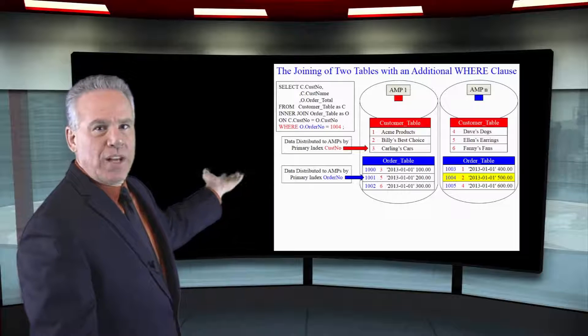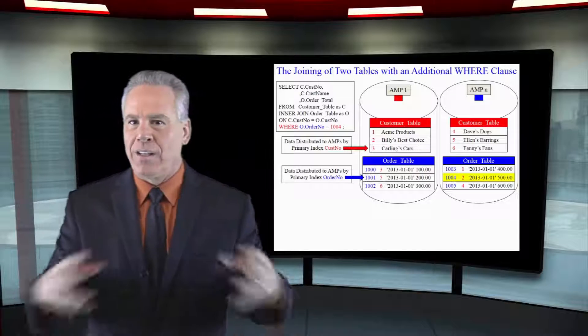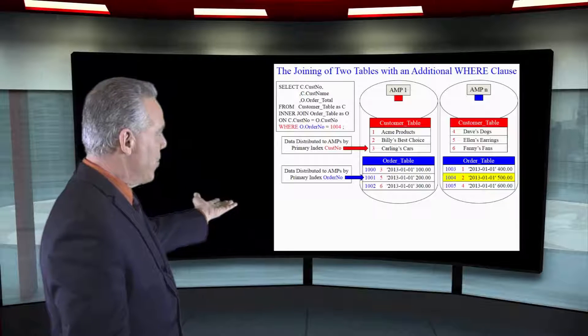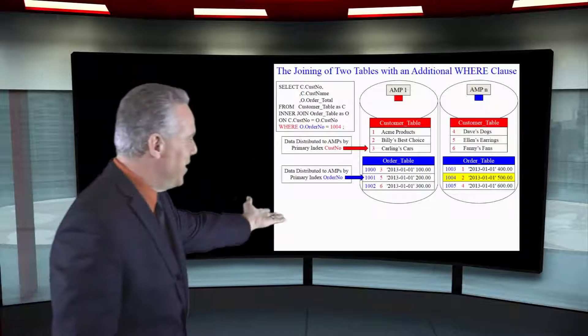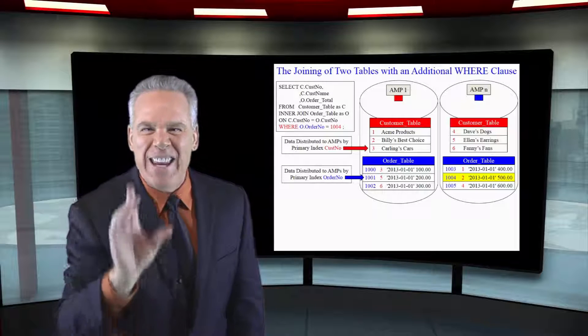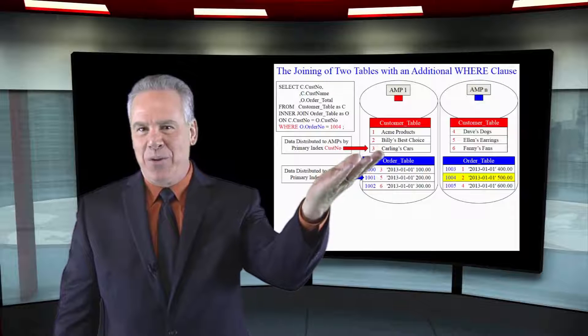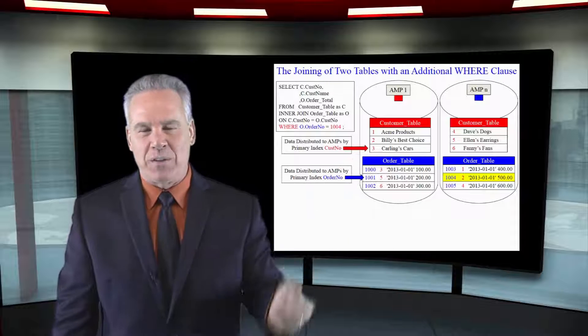Here we're going to join customer table to the order table on customer number equals customer number and we're also looking for where the order number equals 1004. I've got it in yellow. We find that in one second and now we can just match it up with its matching row. That's going to save an enormous amount of time.